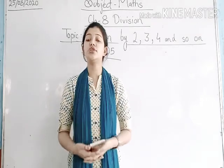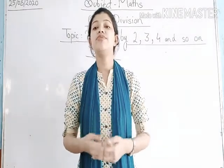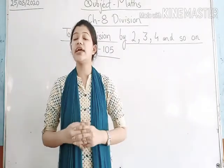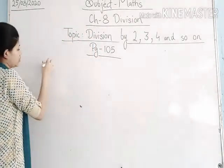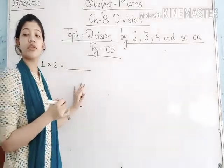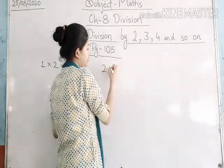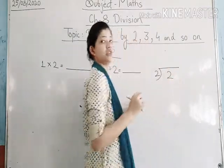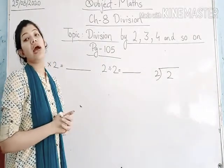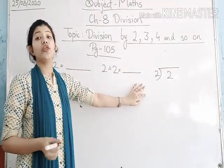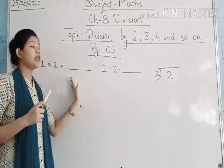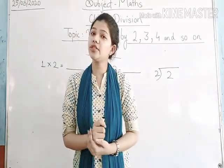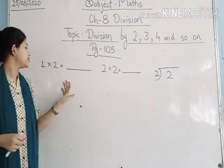Now let's begin with how to solve division sums with the help of this tip. Please open page number 105 in your maths book. Now let's come to the first one: 1 × 2 = __, 2 ÷ 2 = __. You have to fill all of these missing blanks. You will be able to fill them only if you know how multiplication is related to division and how to write division facts in symbol form. Let's start with the first one: 1 twos are.